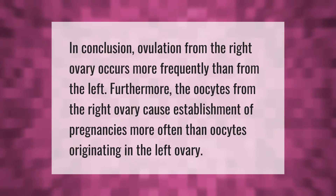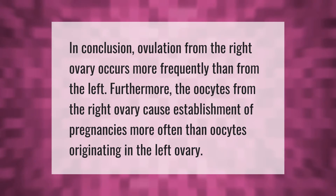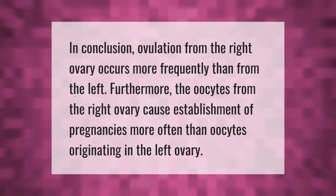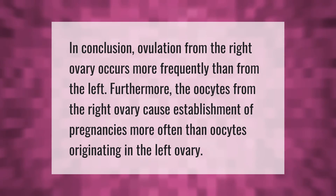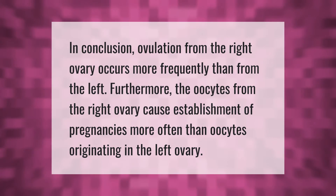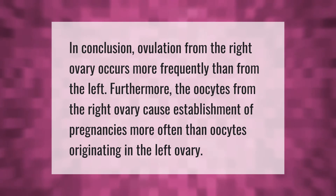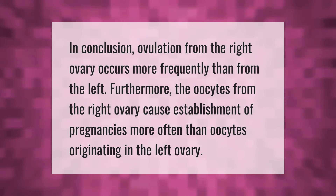In conclusion, ovulation from the right ovary occurs more frequently than from the left. Furthermore, the oocytes from the right ovary cause establishment of pregnancies more often than oocytes originating in the left ovary.